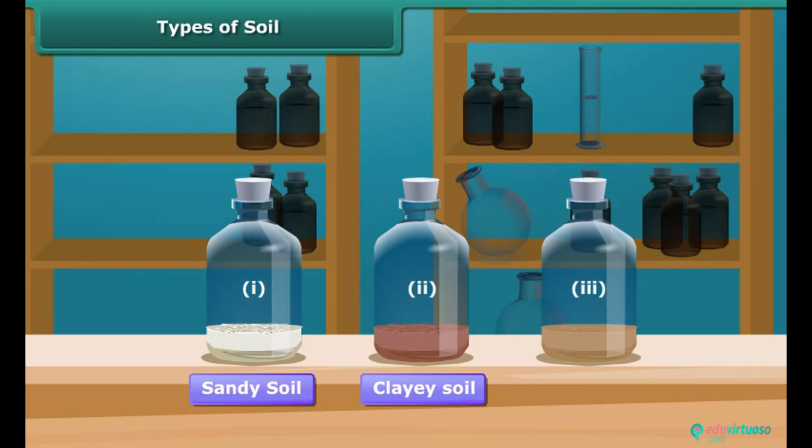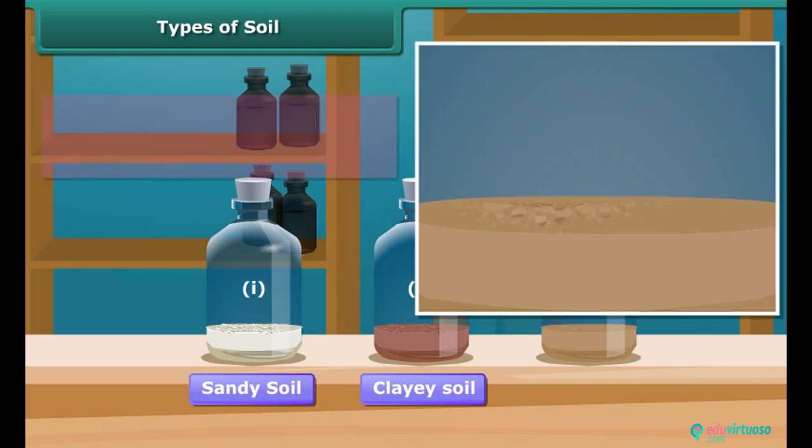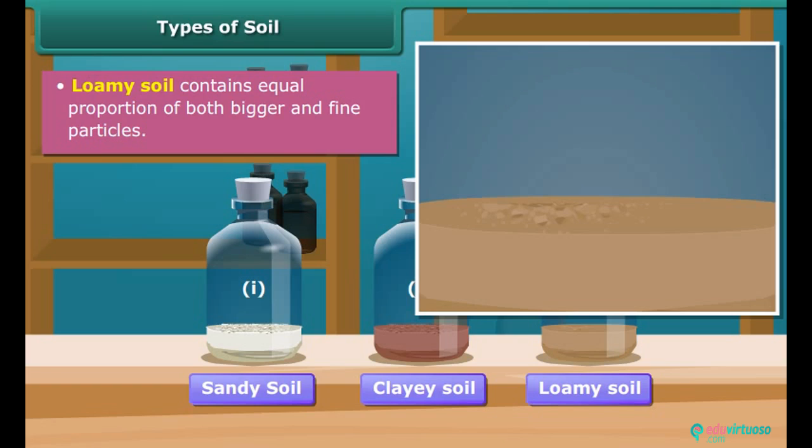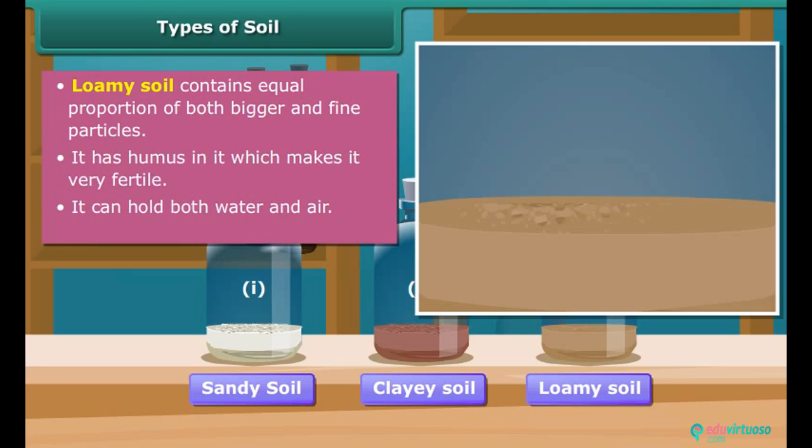Now let's observe third sample closely. It contains equal proportion of both bigger and fine particles. So it is a loamy soil. Among all the three soils, loamy soil has humus in it which makes it fertile. Also it can hold both water and air. Therefore plants grow very well in loamy soil.